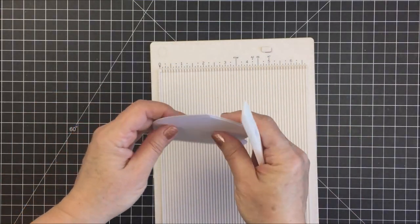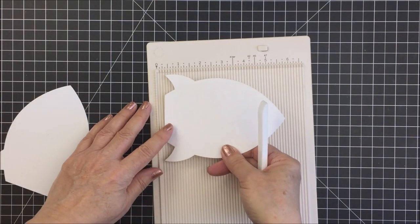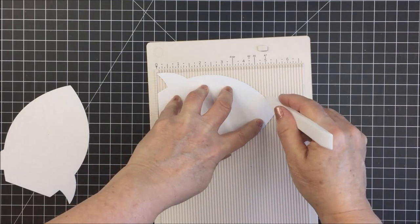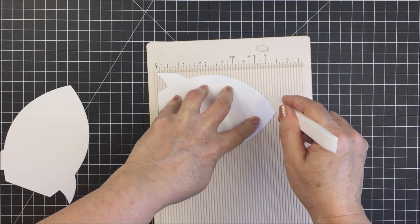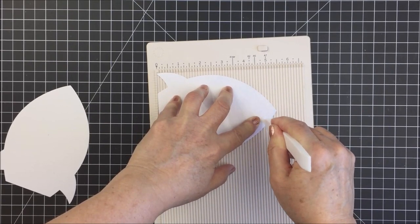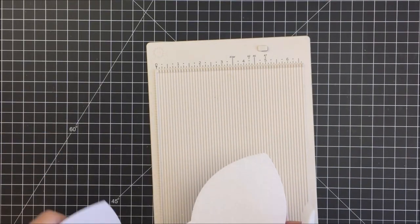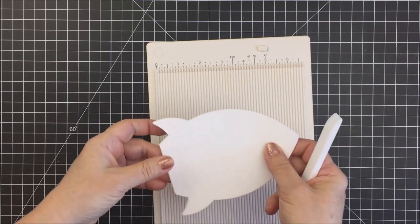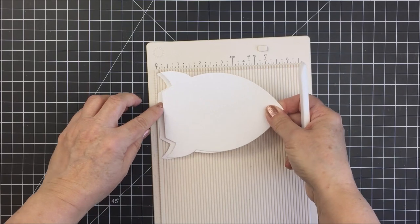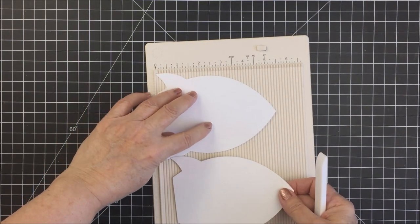Here you can see that I've cut the two spaceships from 110 pound Neenah solar white cardstock. This is my card base and I cut two of those because one is going to be the front and one's going to be the back. I'm scoring the nose of the ship with my scoreboard to create a spot where the front of the card can fold, and I actually just went ahead and scored the other side of it too just to make sure that the two pieces fit together and work properly.